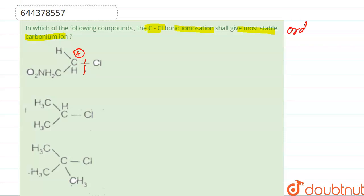And we know that the order of stability of carbocation is: tertiary is most stable, then secondary, then primary, and then methyl. This is the order of stability of carbocation.